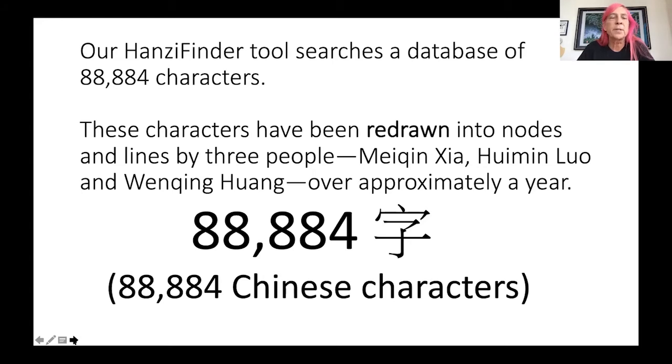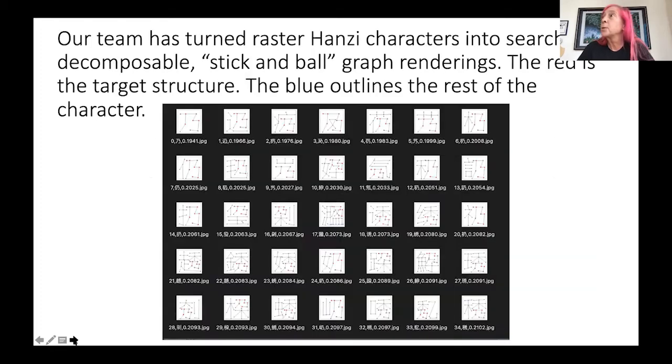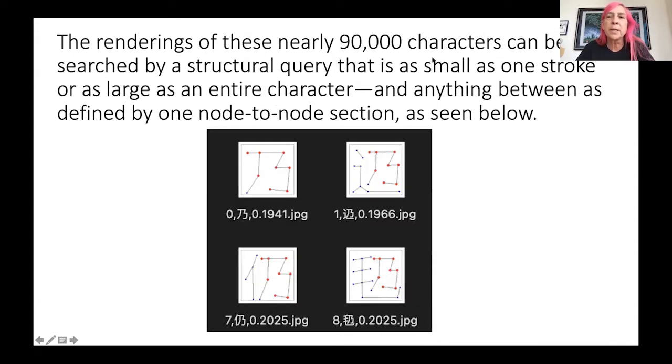I will give an overview of the HansiFinder tool and its potential uses. Chao will describe the creation of our current iteration of the tool and our intent to make the search engine accessible to researchers. Our HansiFinder tool searches a database of 88,884 characters. These characters have been redrawn into nodes and lines by three people over approximately a year. The team has turned raster Hanzi characters into searchable decomposable stick and ball graph renderings. The red is the target structure. The blue outlines the rest of the character.